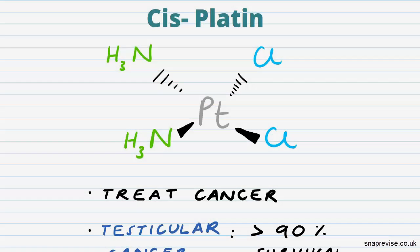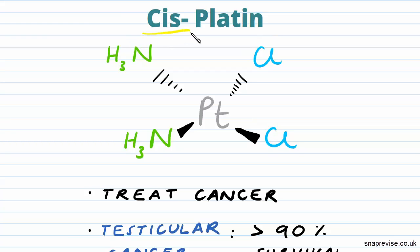I'm sure many of you will be very familiar with this molecule here. It's cisplatin, and it contains a central platinum ion surrounded by four ligands — two ammonia and two chloride ligands. It's a cis isomer because the two heaviest ligands are on the same side.